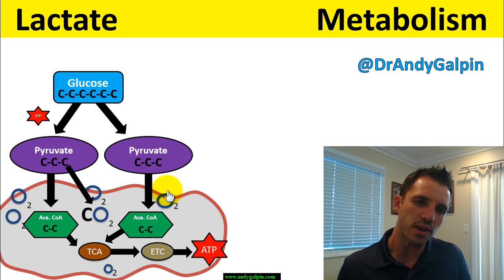Let's put this whole thing together. You start with the six-carbon glucose. It gets split into two separate three-carbon pyruvates. Each pyruvate gets converted into acetyl-CoA — going from two three-carbon molecules to two two-carbon molecules, releasing one CO₂ each. Then each acetyl-CoA gets sent through the Krebs cycle, burning two more CO₂. So we start with the six-carbon glucose molecule and end with no carbons, a bunch of ATP, and some water.